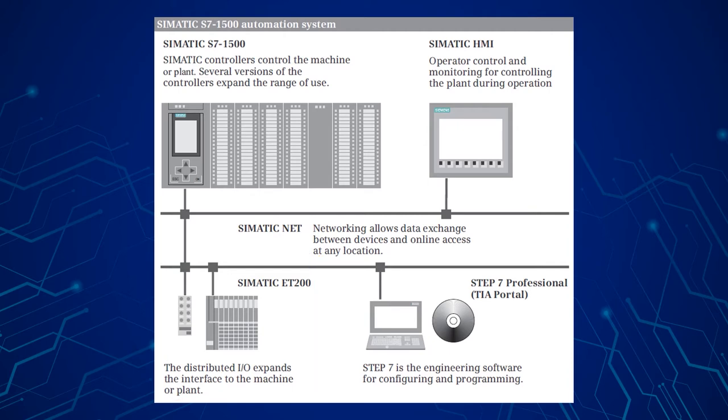Somatic HMI is used to control and monitor a machine or plant and its function. Depending on their version, the devices can provide control functions via process images, display system status and alarm messages, and manage the automation data in the form of recipes or measured value archives.